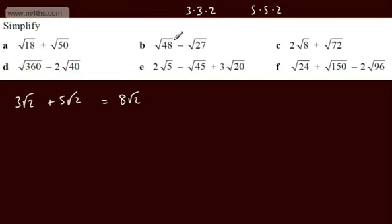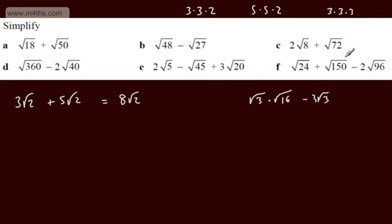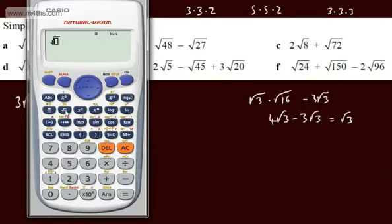Let's look at root 48 minus root 27. Root 48 can be written as root 3 multiplied by root 16, and root 16 is 4, so that's 4 root 3. Root 27: since 3 × 3 × 3 = 27, we write that as root 3 multiplied by 3, giving 3 root 3. So 4 root 3 minus 3 root 3 gives root 3. And checking on a calculator, root 48 minus root 27 equals root 3.